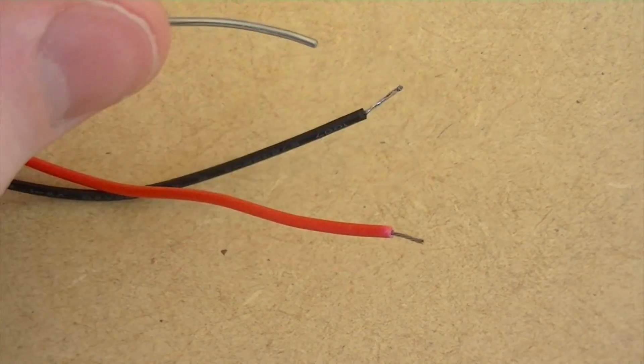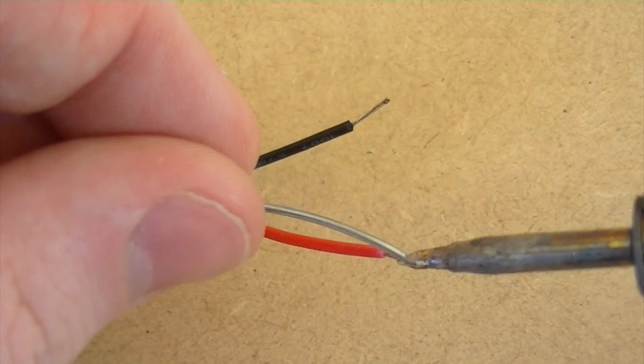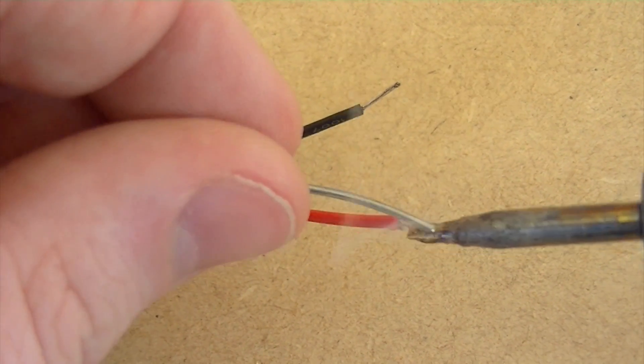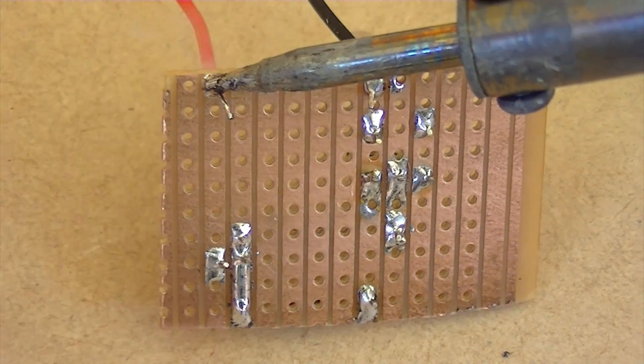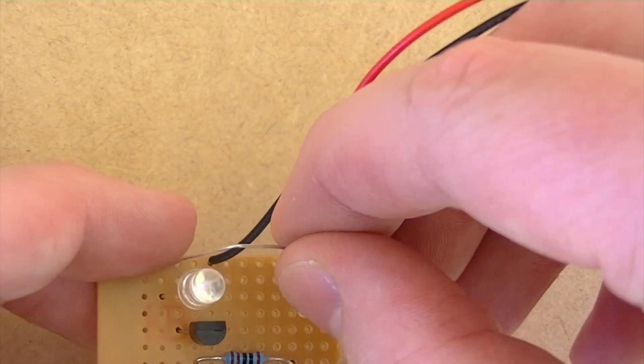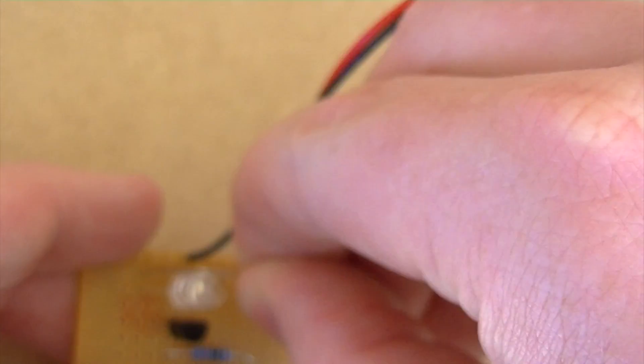Then strip and tin the leads of the 9 volt battery snap. Then solder them to the corresponding voltage rails. Next bend the legs of another 10k ohm resistor. Then position it in the board like so.